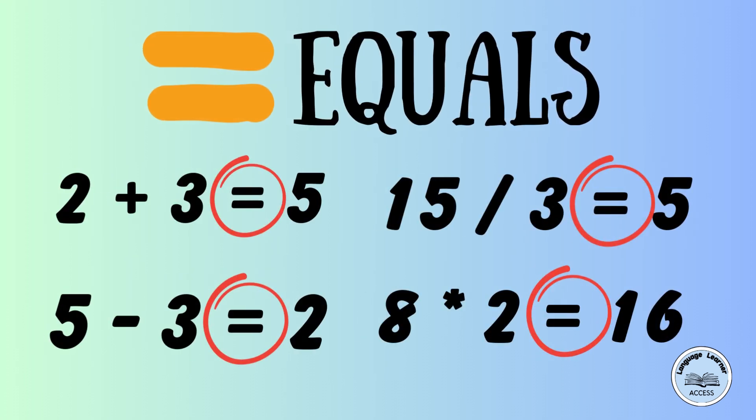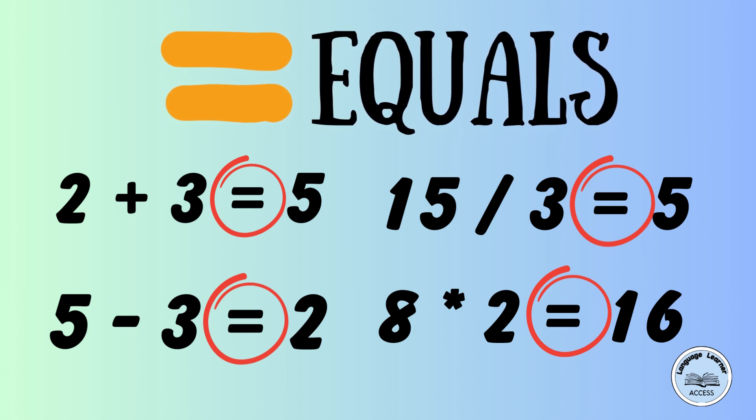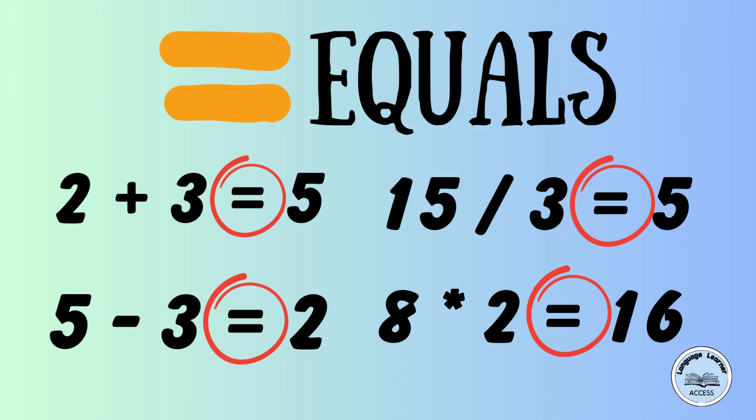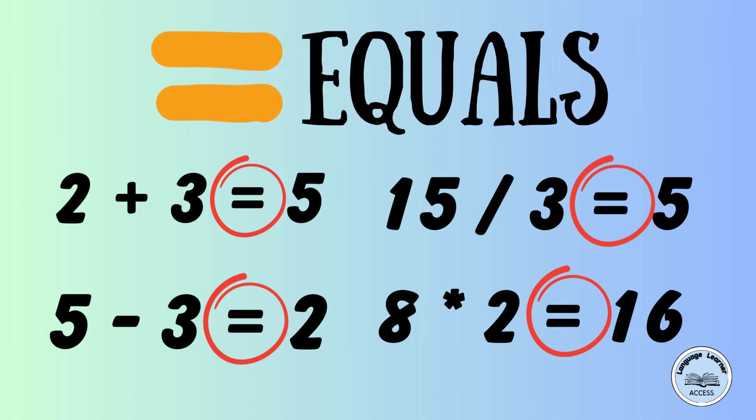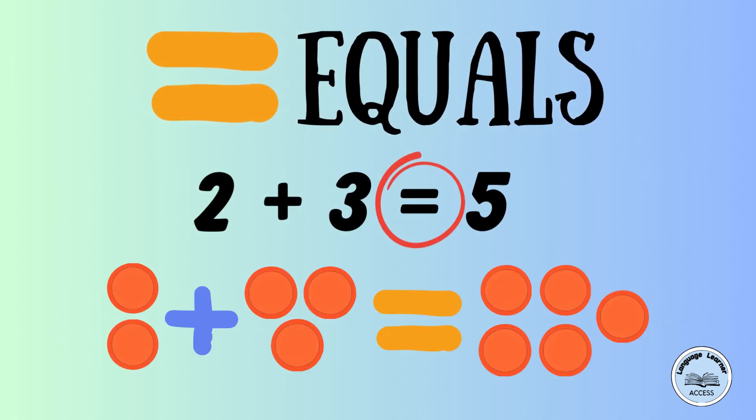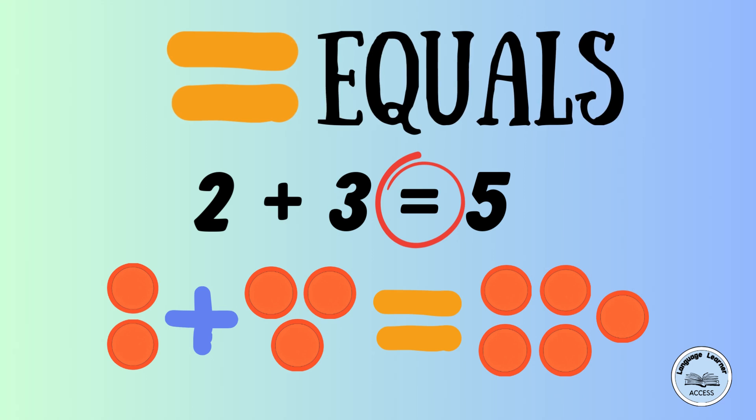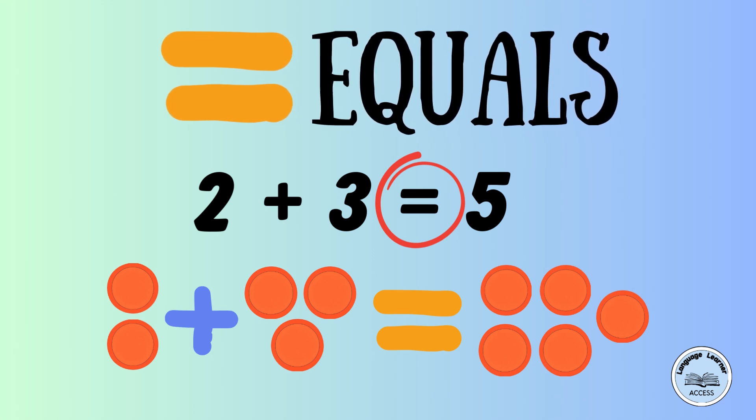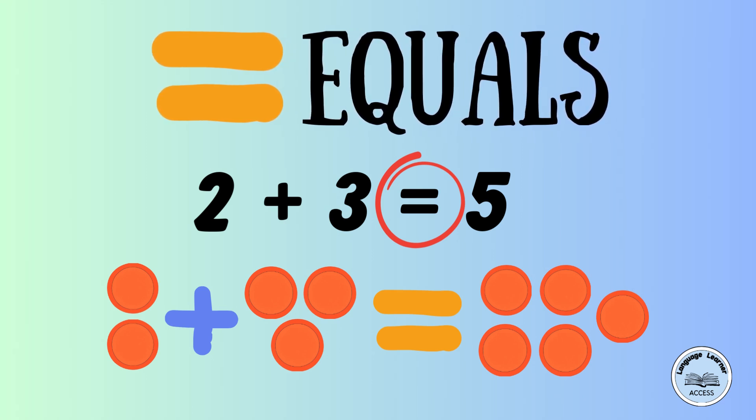Basic math equations include an equal sign. The equal sign shows that both sides are the same or have the same value. For example, in the equation 2 plus 3 equals 5, the equal sign tells us that 2 plus 3 has the same value as 5.